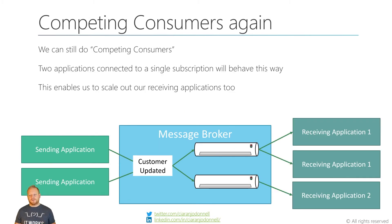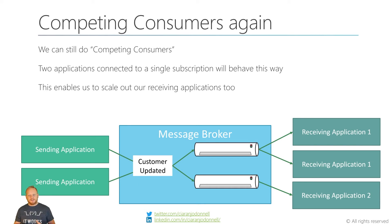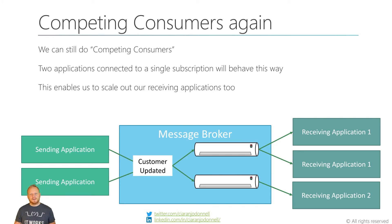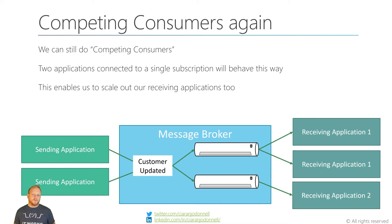We can still do competing consumers with this approach. Subscriptions are effectively just like queues, but they're queues on the receiving side rather than the sending side. As we see here in this example, sending applications are sending messages to the 'customer updated' topic, going into two different subscriptions. Two copies of receiving application one are connected to the same subscription and will act like competing consumers on a queue. Receiving application two is connected to its own subscription and gets a copy of every message.